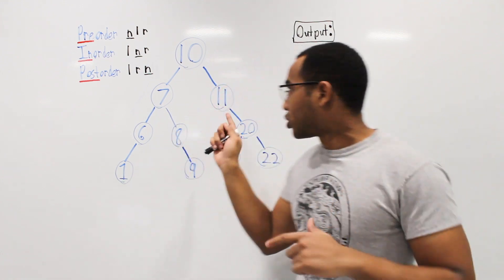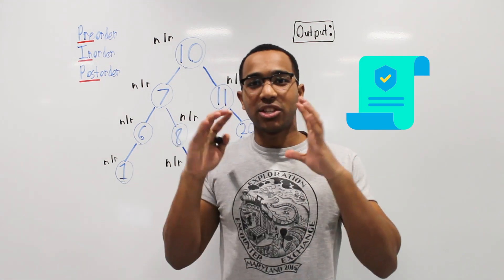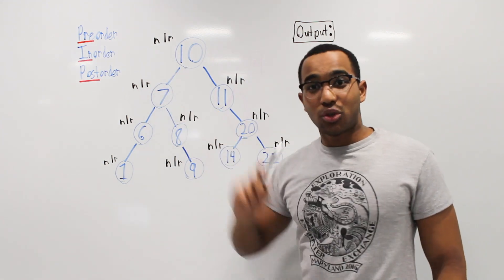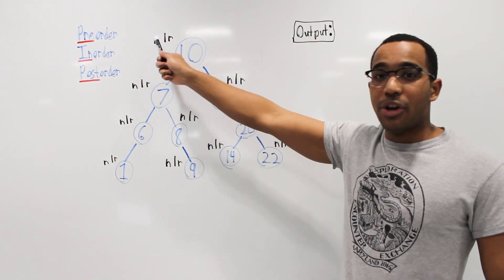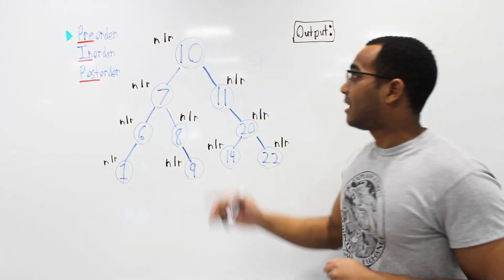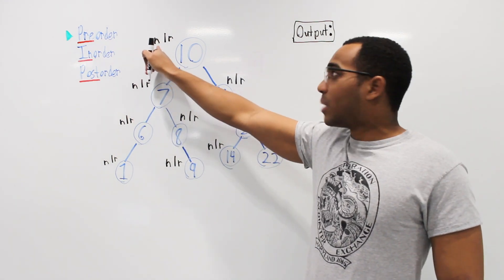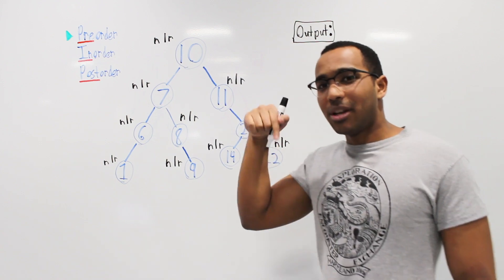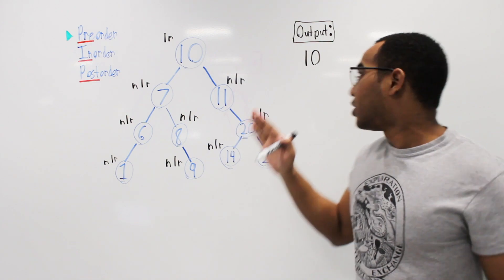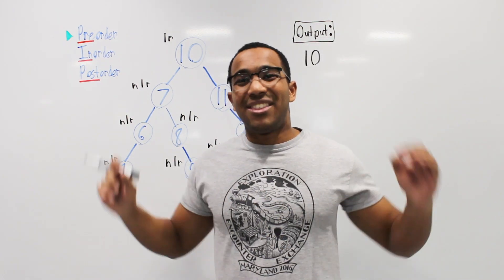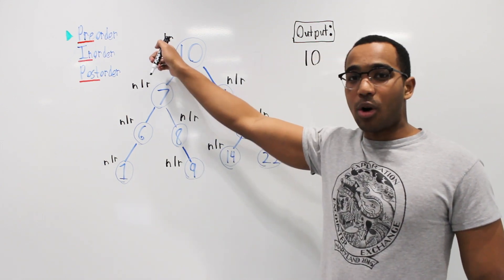When traversing a tree, think of recursion as a policy we execute at each node. Think of the tasks we need to do at a node — the state stays on the call stack. For pre-order, our policy at each node is: node, left, right. We don't just have to print a node; we can do any form of work. The whole point is visitation — getting our fundamentals down for visiting a node.